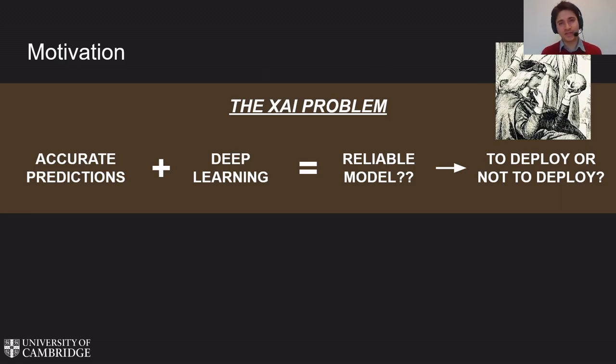How can we trust its predictions? The key challenge of explainable AI is realizing interpretable models we can trust and deploy. With this work we aim at addressing three of the main knowledge gaps in explainable AI.